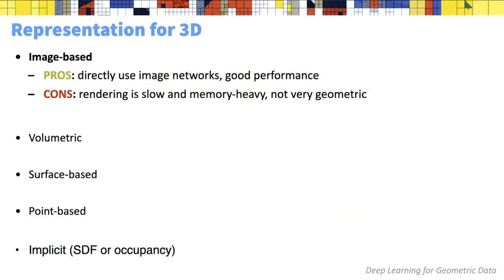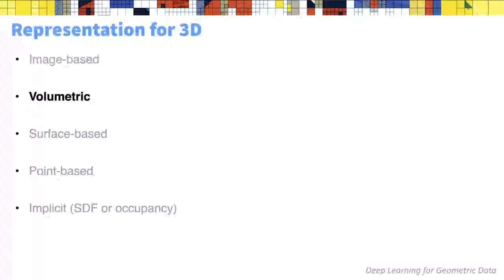To recap the image-based approach: the advantage is that we can leverage all existing image networks, so performance is often very good. On the negative side, rendering is required as pre-processing, which can be slow, memory-heavy, and not very geometric-friendly.